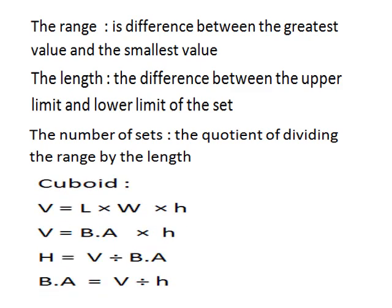The rules of the cuboid: if you want to find the volume of a cuboid, you can find the volume by length multiplied by width multiplied by height. Another rule: you can find the volume by base area multiplied by height.